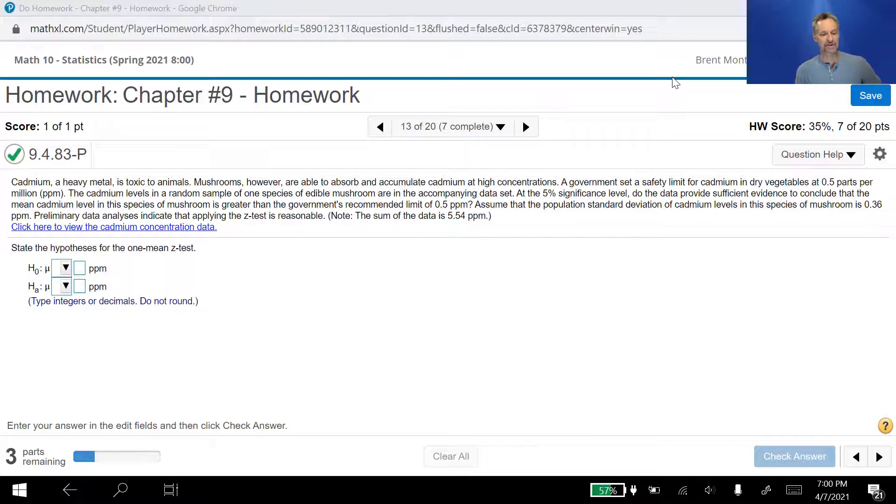It says cadmium, a heavy metal, is toxic to animals. Mushrooms, however, are able to absorb and accumulate cadmium at high concentrations. The government set a safety limit for cadmium in dry vegetables at 0.5 parts per million. The cadmium levels in a random sample of one species of edible mushrooms are in the accompanying data set.